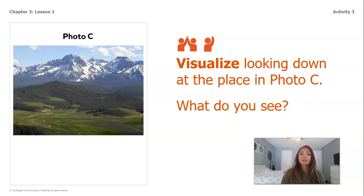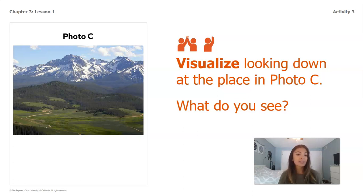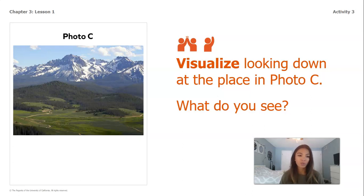We're going to do the same thing with this photo. We're going to visualize looking down at the place in photo C. Again, thinking about: do we see highland? Do we see very high highland? Do we see lowland, water, and so on.